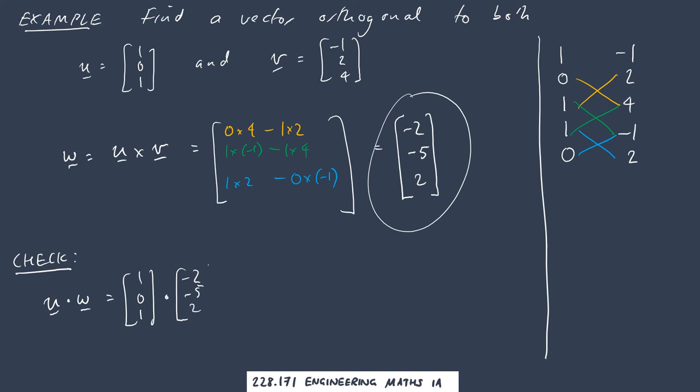That's good, that's what we thought would happen. And then v dot w will equal, what was v again, [-1, 2, 4] dot [-2, -5, 2] which is going to be 2.